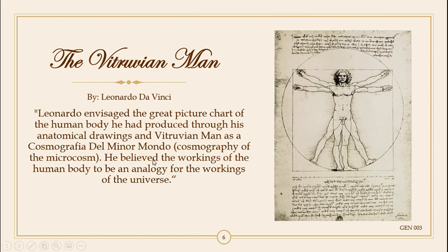As we can see here, we have the Vitruvian Man by Leonardo da Vinci. Leonardo's famous drawings of the Vitruvian proportions of a man's body — first standing, inscribed in a square, and then with feet and arms outspread, inscribed in a circle. This provides an excellent early example of the way in which his studies of proportion united both artistic and scientific objectives.